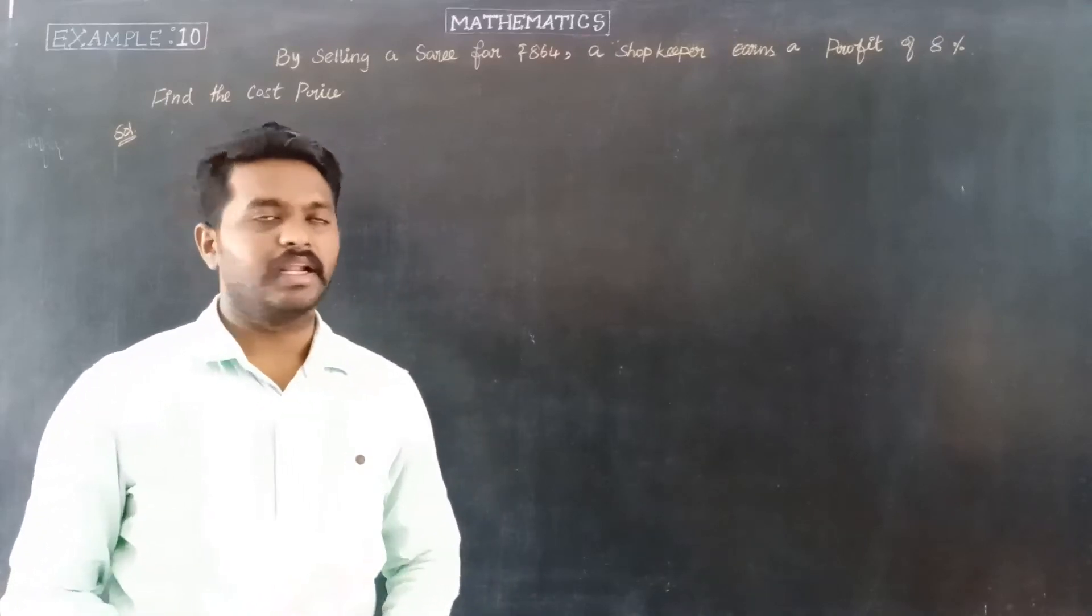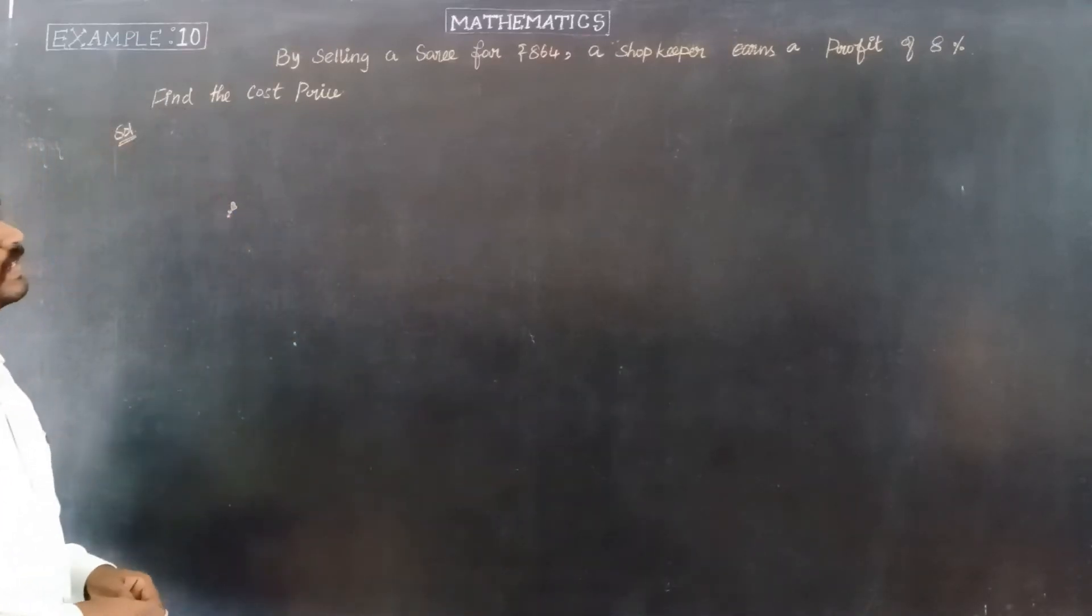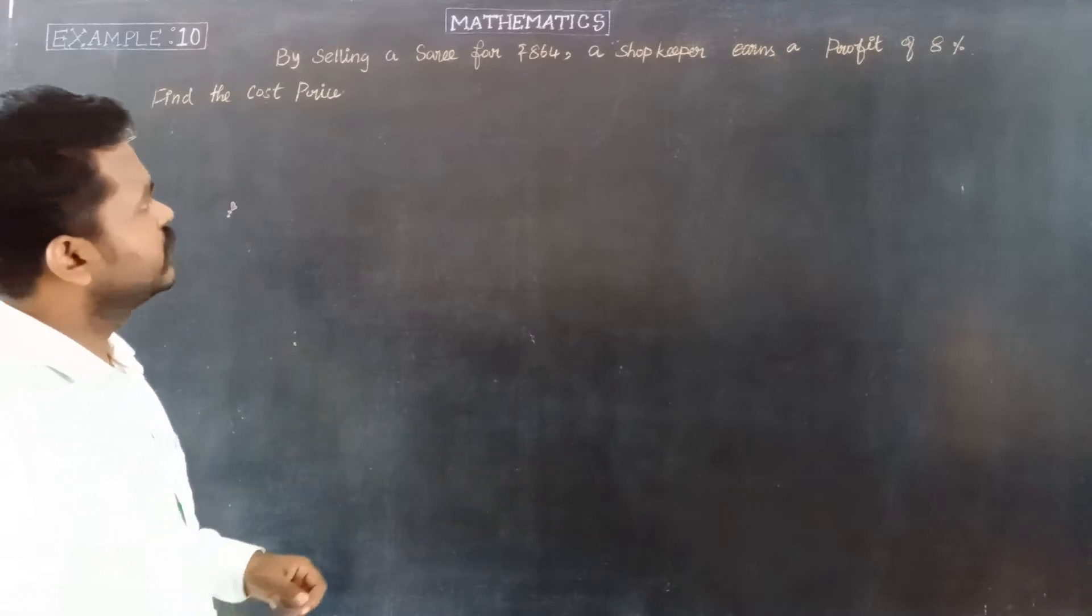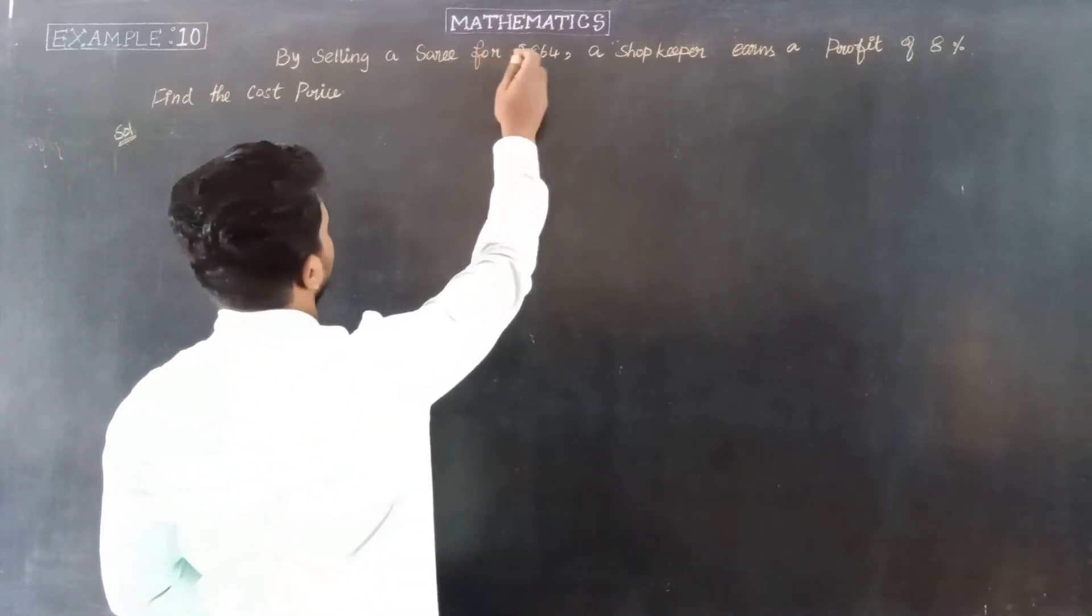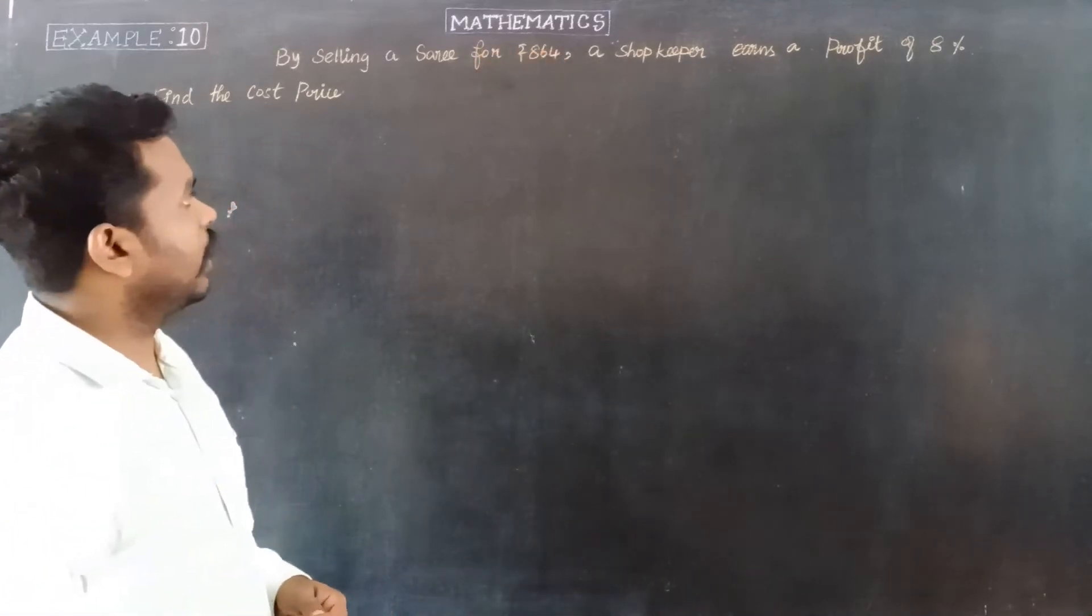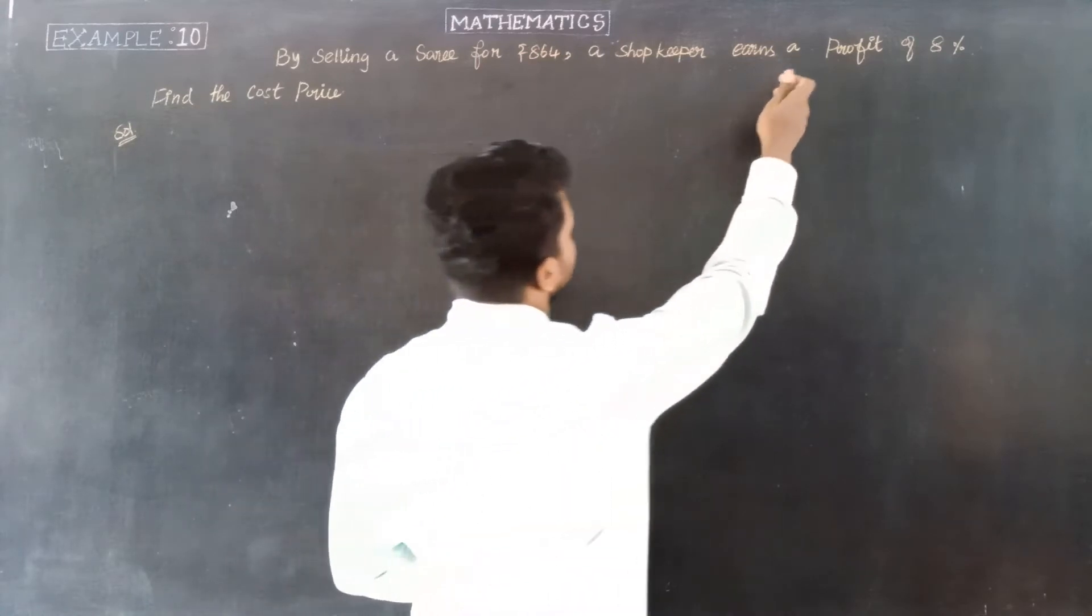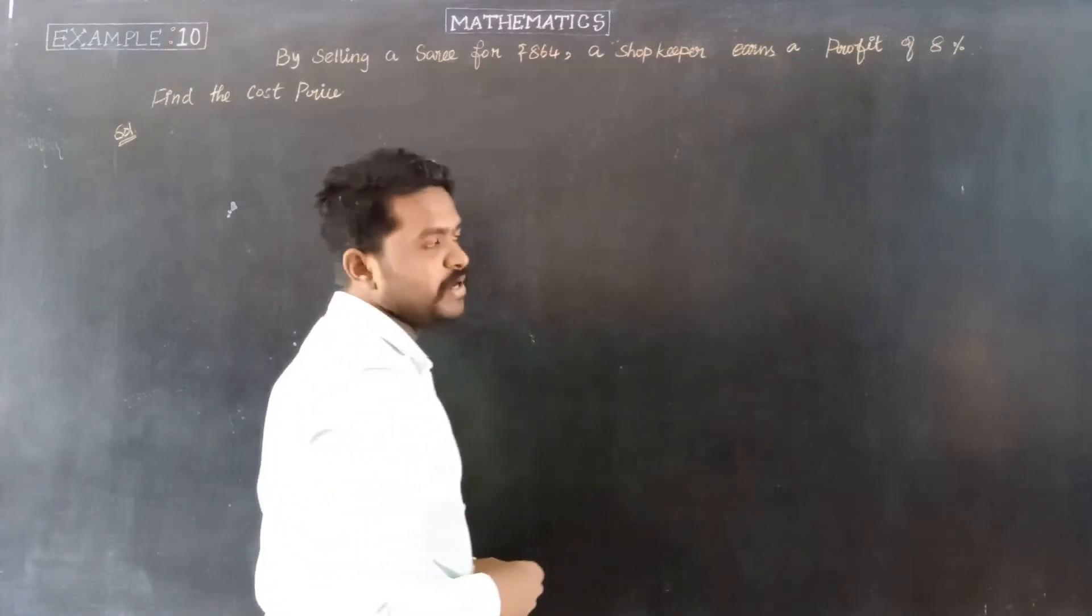Hello students, let's take example 10. By selling a sari for Rs. 864, a shopkeeper earns a profit of 8%.